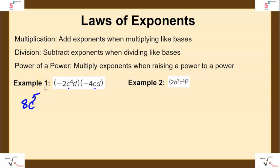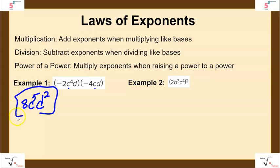Then we have d times d. They each have an exponent of 1, so when we multiply like bases, we add the exponents: 1 plus 1 gives us 2, so this would be d to the 2nd power. So the answer is 8c to the 5th d squared.